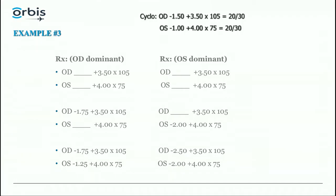The reason the reduction differs between the two dominant-eye scenarios is because the dominant eye controls accommodation and we target spherical equivalent of zero for that eye. When the right eye is dominant there is a 3.50 cylinder, so we need 1.75 to reach zero — a 0.25 reduction. When the left eye is dominant there is a 4.00 cylinder requiring 2.00 — a full one-diopter reduction. The cylinder magnitude drives the difference.